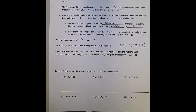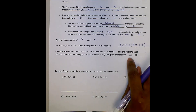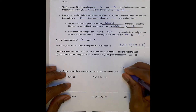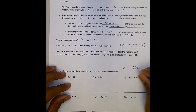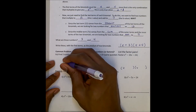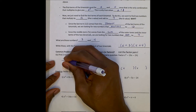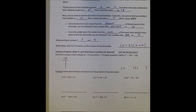We want to list the factor pairs. Find two numbers that multiply to give you negative 24 and add to give you negative 10. This is the same as factoring X squared minus 10X minus 24. If you have trouble finding the numbers, here's what to do: you can find many number combinations that add to negative 10, but only a few will multiply to give you negative 24, so always think about the multiplication first.